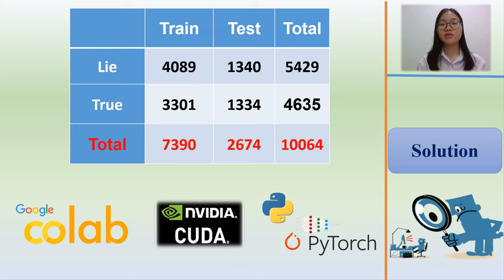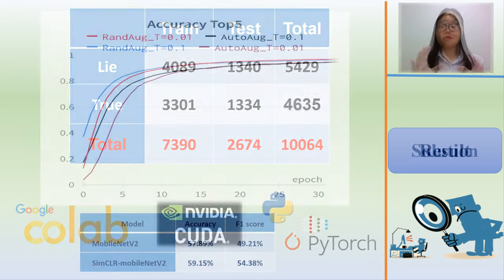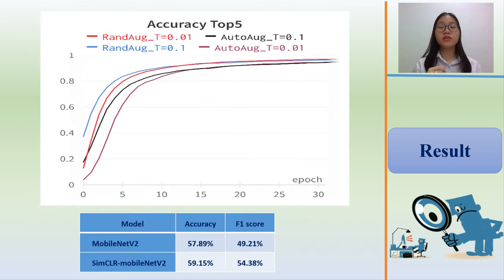The training task was done in the Google Cloud environment with Python and the PyTorch library, using an NVIDIA Tesla P100 PCIe 3.0. We also conducted deep learning using the pre-trained MobileNet V2 model on the ImageNet dataset for comparison.